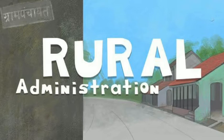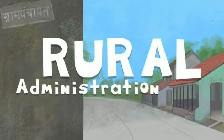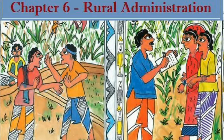The administration has the following main functions: to maintain law and order; to ensure all records are properly maintained — this would be records of land, properties, birth, death, education and so on; to provide and maintain the standard of civic amenities like health, education, water and electricity supply; rescue and relief in case of a calamity; and collection of taxes and revenue.